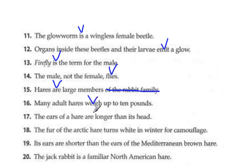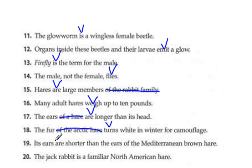17 — the ears of what? Of a hare. Our verb is 'are.' 18 — the fur of what? Of the arctic hare. The verb is 'turns.' 19, the verb is 'are.' And we have 'of what?' — of the Mediterranean brown hare. And number 20, the verb is 'is.'